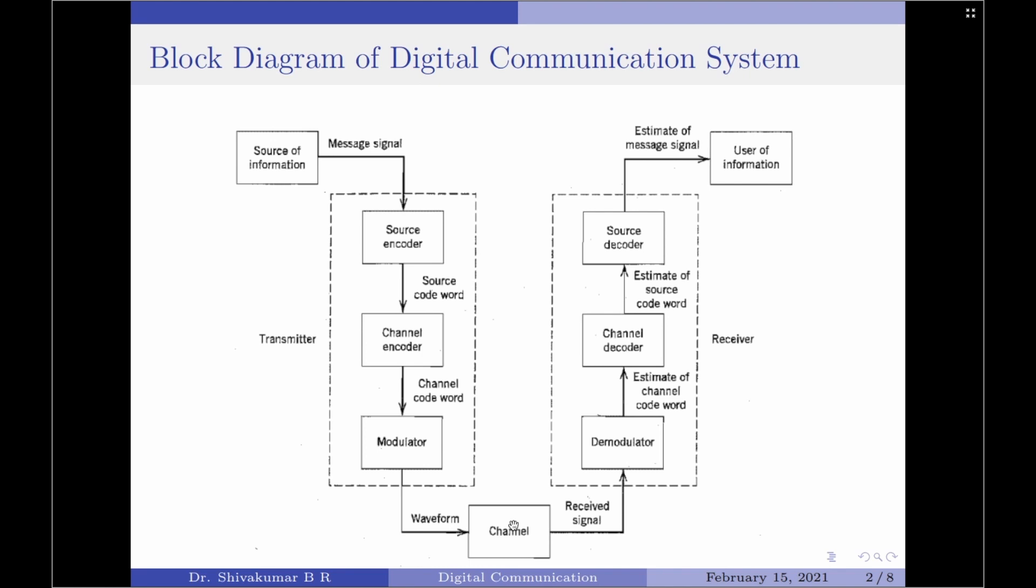A large number of channels are available in current technology such as pair of wires, coaxial cables, optical fibers, radio channel, satellite channel, or a combination of any of these. The communication channels only have a finite bandwidth and non-ideal frequency response. The signal often suffers amplitude as well as phase distortion as it travels over the channel. Also the signal power decreases due to the attenuation of the channel. Sometimes the signal is corrupted by unwanted unpredictable electrical signals which are commonly referred to as noise.